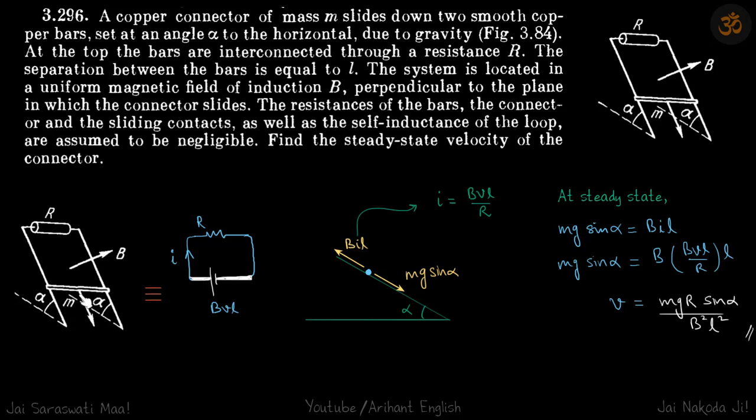A rod is sliding down a slope, connected to a resistor R, and a magnetic field is perpendicular to the slope. The question asks: what will be the steady state velocity of this connector?